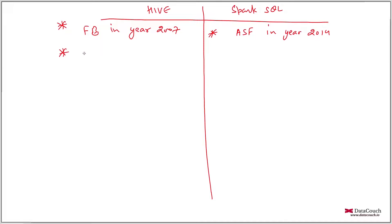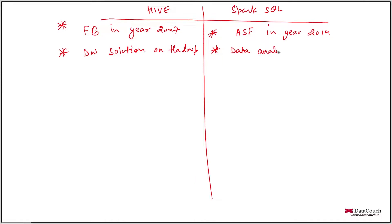Hive is basically a data warehousing solution on Hadoop primarily. Spark SQL was developed with an intention to perform data analysis and processing on the Spark Core framework.